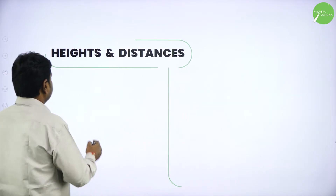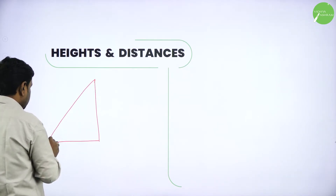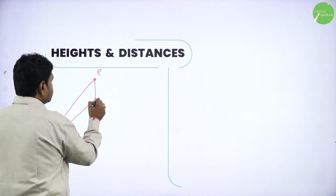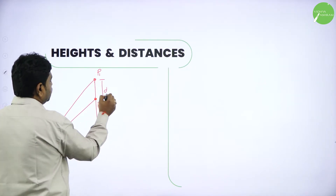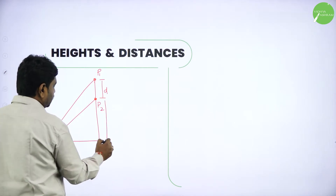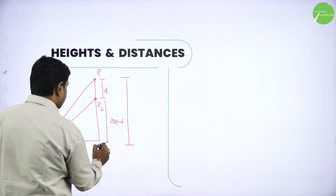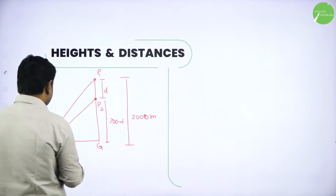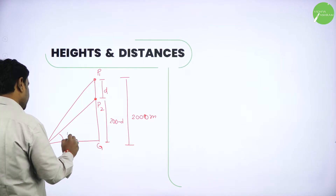There are two planes. Plane one is passing over plane P2, and the distance between them is D. So from P2 to the ground it is 2000 minus D, but the total from ground level to P1 is 2000 meters. Point A is the observation point, making 45 degrees to P2 and 60 degrees to P1.